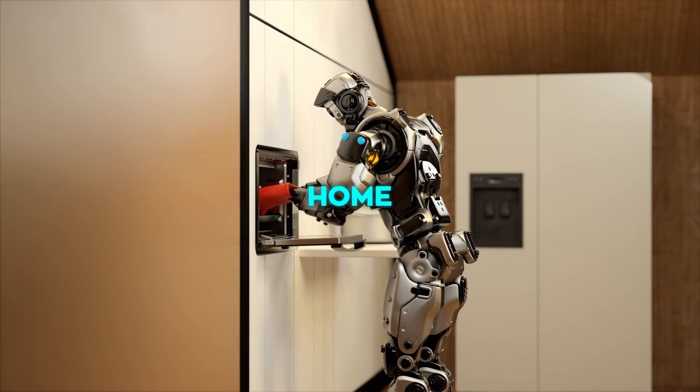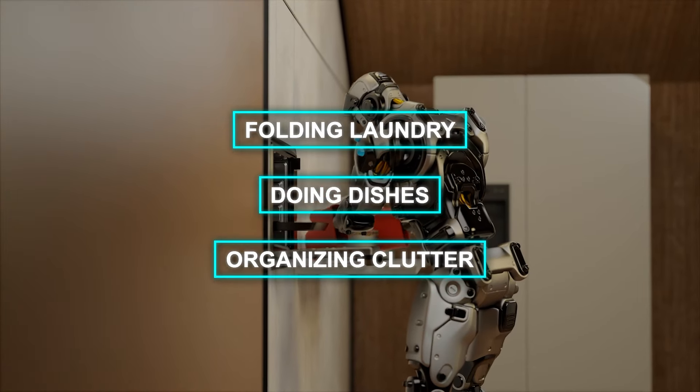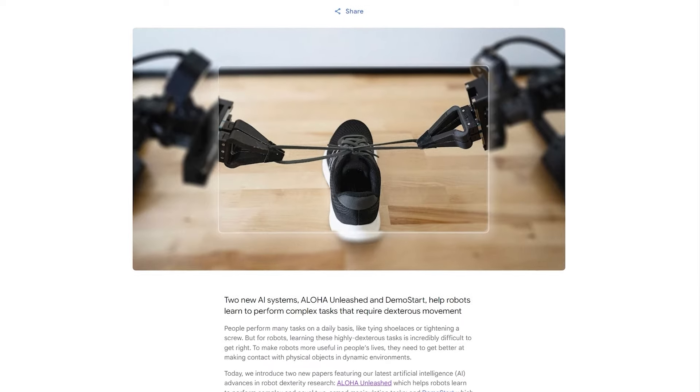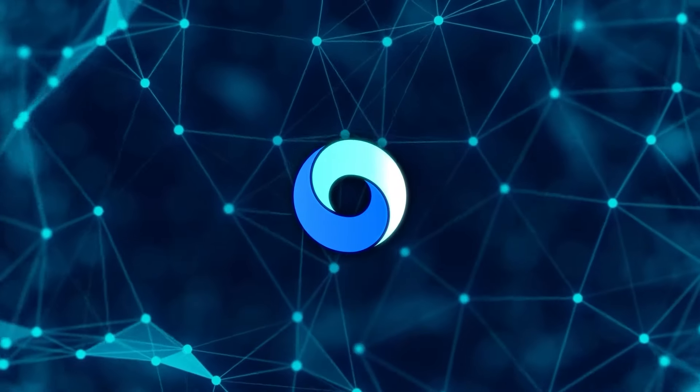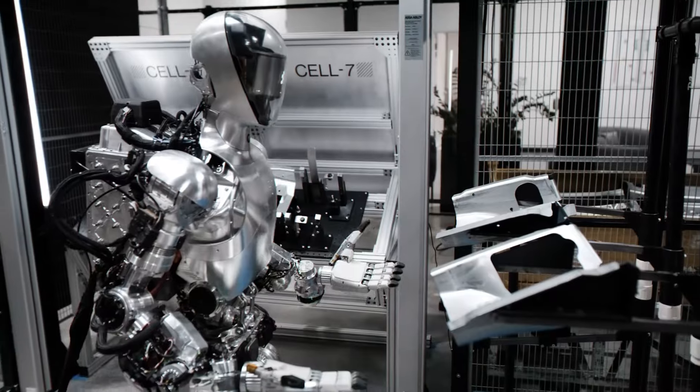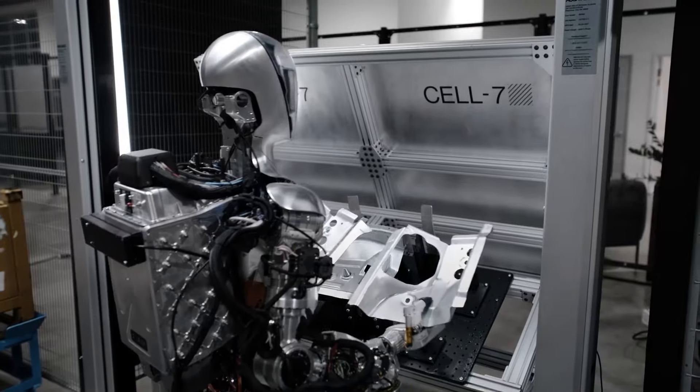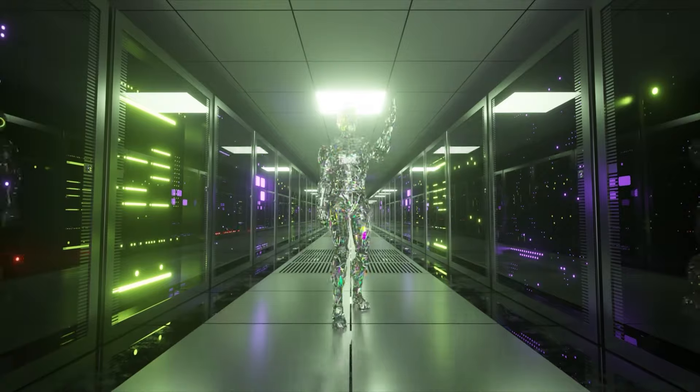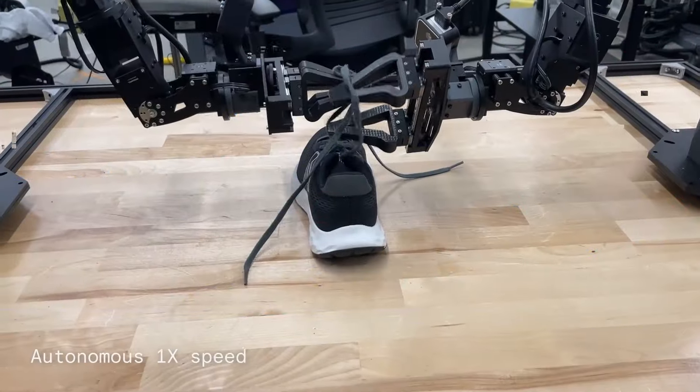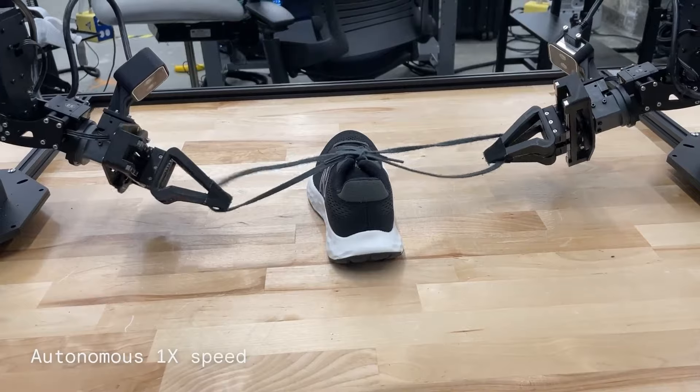In homes, robots with this level of dexterity could finally take on tasks like folding laundry, doing dishes, or organizing clutter. While we're not there yet, these systems are pushing robotics in that direction. But beyond these specific examples, what's clear is that we're on the cusp of a major shift in what robots can do. With advances in robot dexterity powered by AI, the limitations are falling away. Tasks that were once thought to be too complex or nuanced for machines are now becoming achievable.